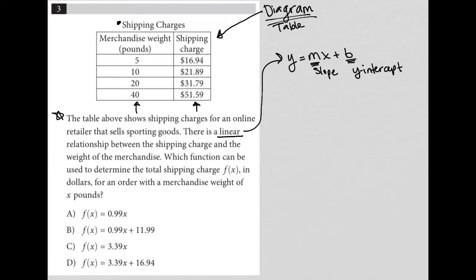So I'm going to need to use the information from the table to fill in this equation here. It looks like we're using F of X instead of Y. So that's fine. I'll just say F of X is equal to MX plus B. F of X and Y are always interchangeable. So keep that in mind.